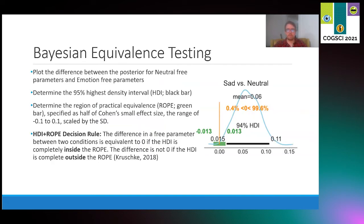After we fit this hybrid RL DDM to participant choice and response time data, we calculated the differences between the posterior distributions of emotion condition parameters and neutral parameters. Here we plot the difference posterior, which is a 95% highest density interval as a black bar and the region of practical equivalence to zero as a green bar. Using an HDI plus ROPE decision rule, if 95% of the difference posterior were practically equivalent to zero or inside of the ROPE, we would decide that a parameter was no different between neutral and emotion conditions.